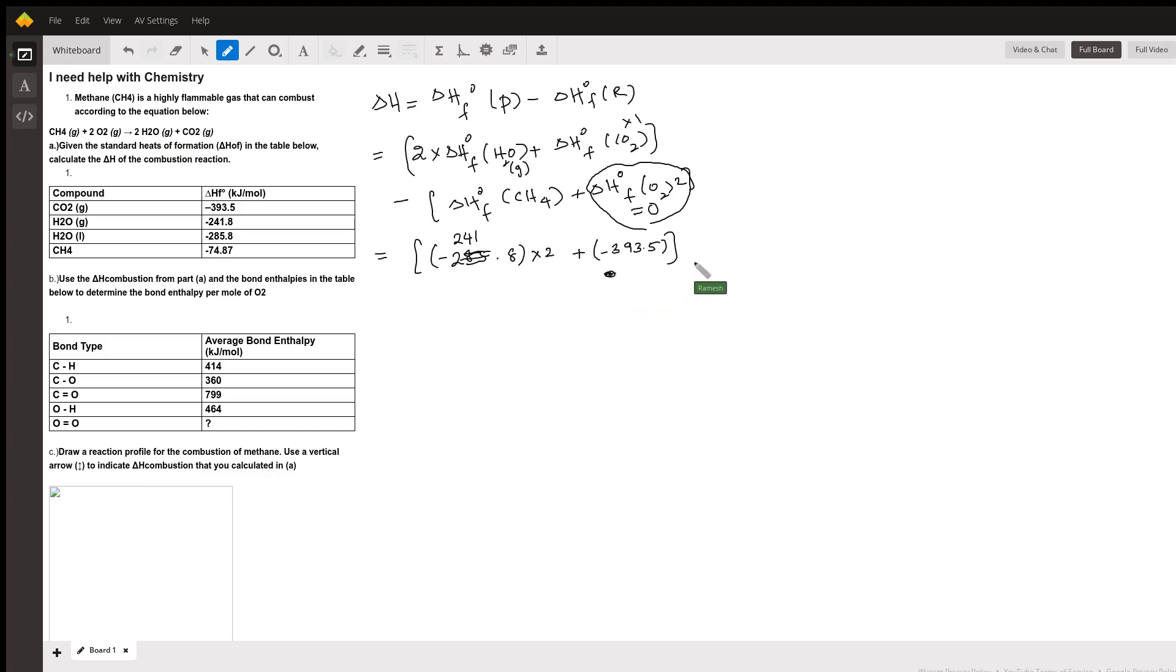From that, you will be subtracting the value of CH4, which is oxygen is 0. So 74.87 plus 2 times 0. You can complete the math. So minus 241.8 times 2. If you have time, we can come back and finish the math because they give me only five minutes time to go over all the parts. But if I have time, I'll come back to this.